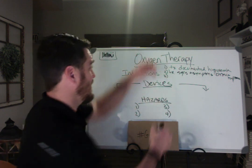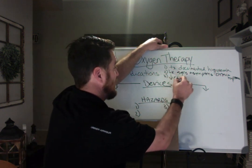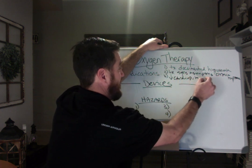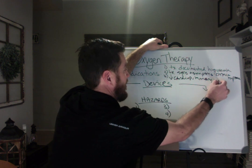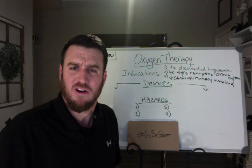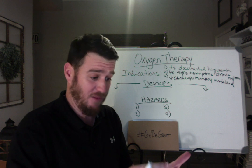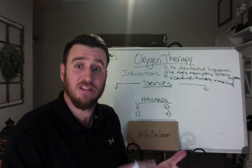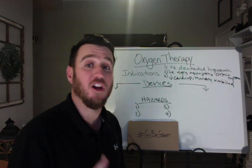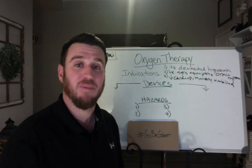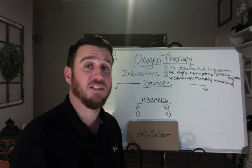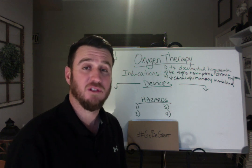And then the last indication is to decrease the cardiopulmonary workload. What is cardiopulmonary workload? That means you have tachypnea present, you have tachycardia present — an increased cardiopulmonary workload. Cardio meaning heart, pulmonary meaning lungs. The patient is working hard to breathe and to perfuse, and you're going to give oxygen to reduce that workload.